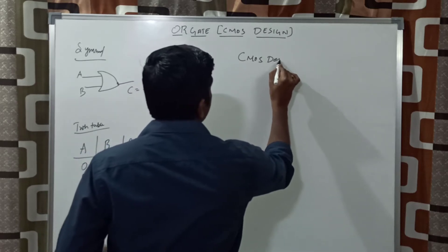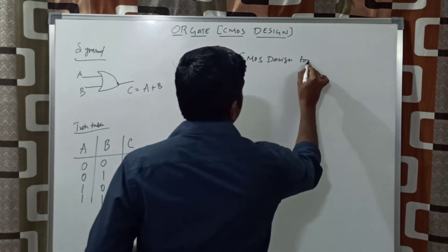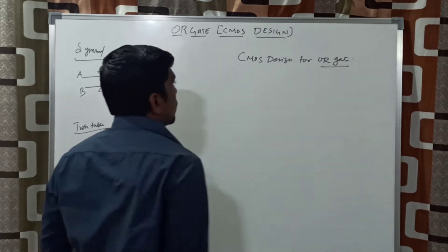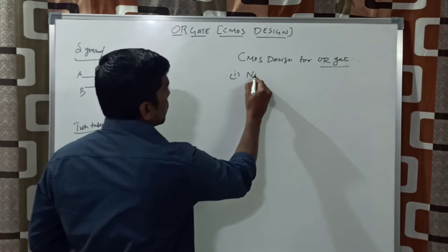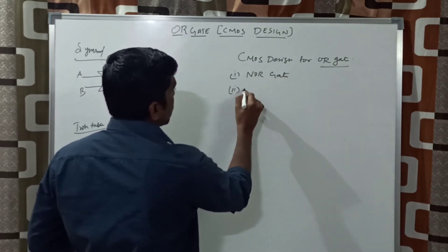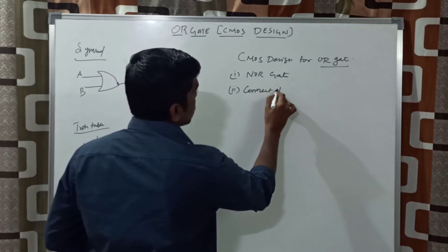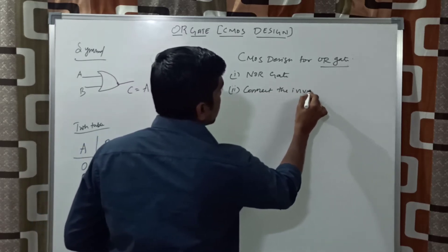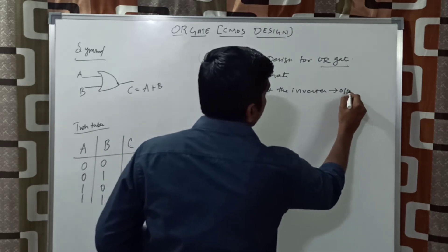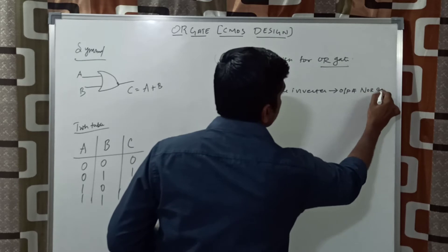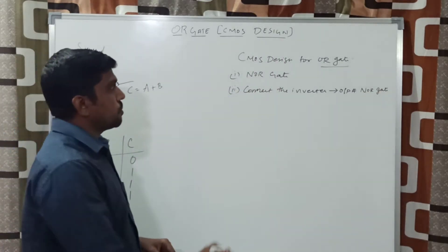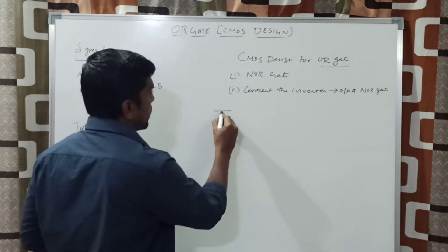The CMOS design for OR gate follows two steps. First, draw the NOR gate. Second, connect an inverter to the output of the NOR gate. As a procedure for developing the OR gate function, first draw the NOR gate circuit, which we already discussed in the previous video.